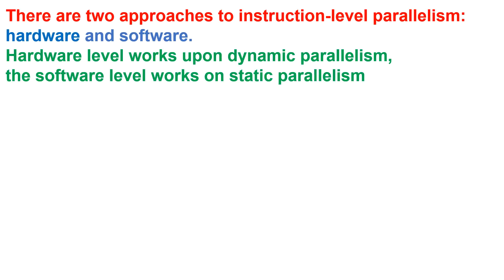In dynamic parallelism, the processor decides about the processes that will run parallely. And in static parallelism, the compiler will decide about the number of processes that will run parallely.